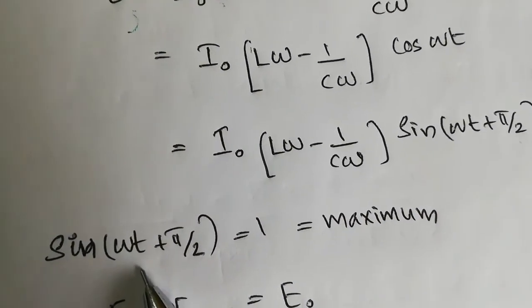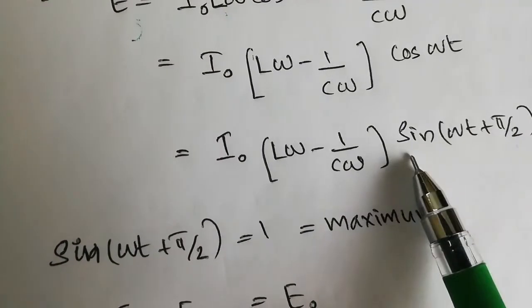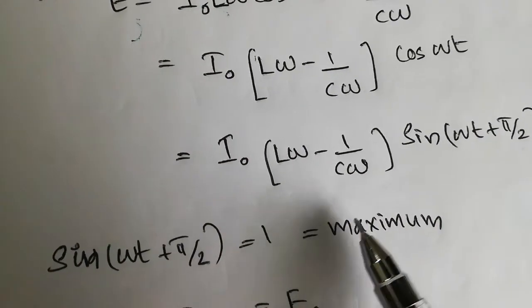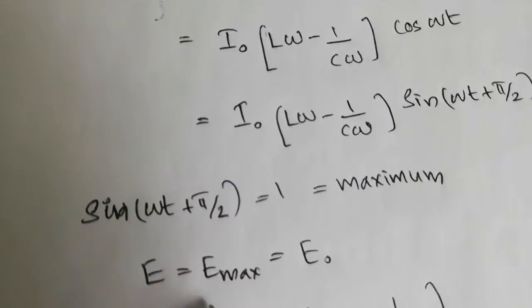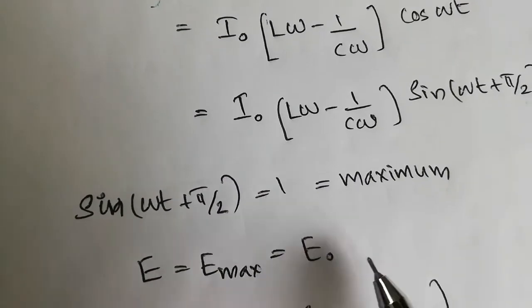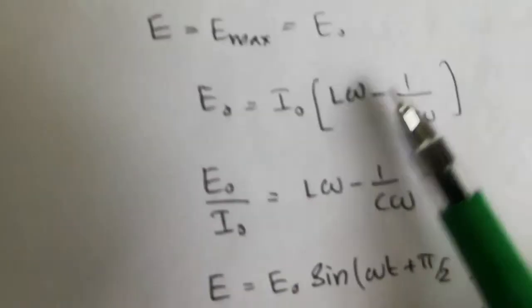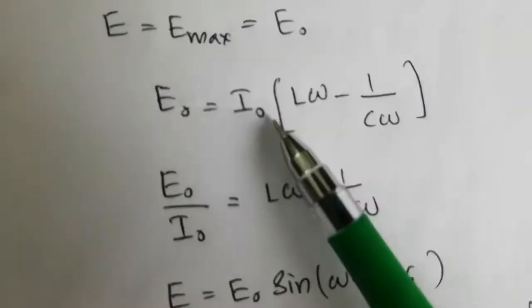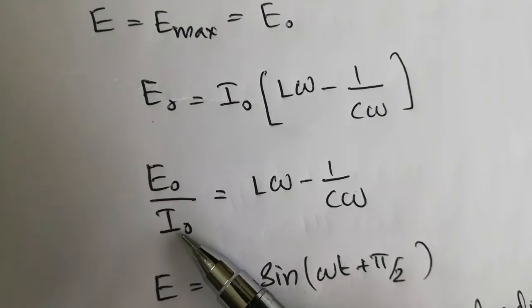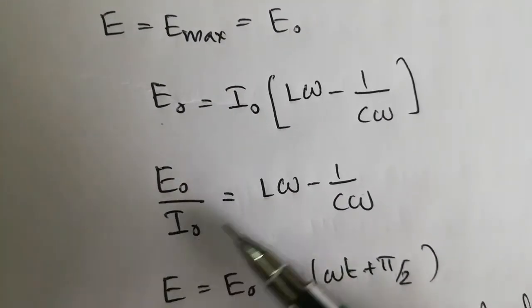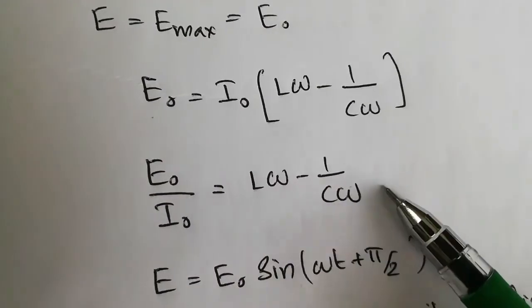As we all know, the maximum value of sin will be 1, and when it is 1, the E also will be equal to maximum. That is, E equals E max equals E0. By substituting that, E0 equals I0 times L omega minus 1 by C omega. By rearranging, we get E0 by I0 equals L omega minus 1 by C omega.